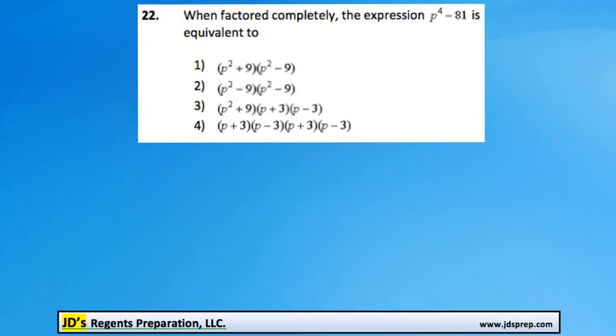This is problem number 22 from the January 2015 Algebra Regents exam, and it's fairly straightforward. We just need to factor p to the power of 4 minus 81.